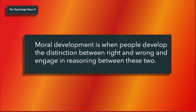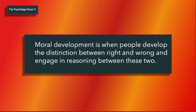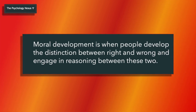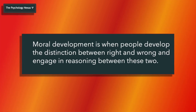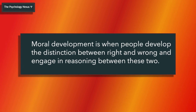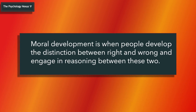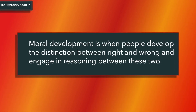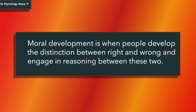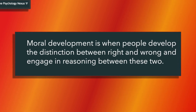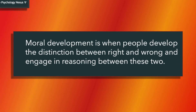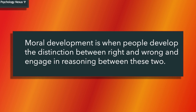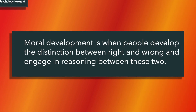Piaget also proposed a theory of moral development. Under age nine, children typically decide what is good based on rules taught by others. By nine, they are more autonomous in their judgments. Under nine, children decide if an action is good or not based on the outcomes, whereas from about nine, the intention is considered.